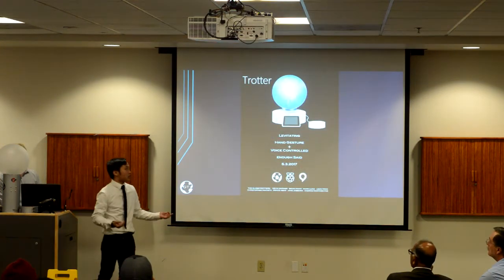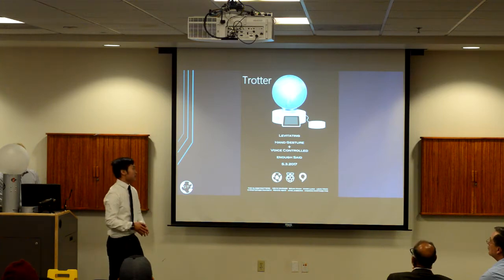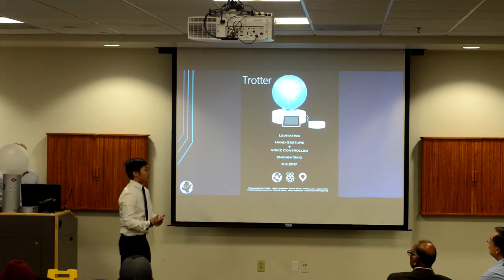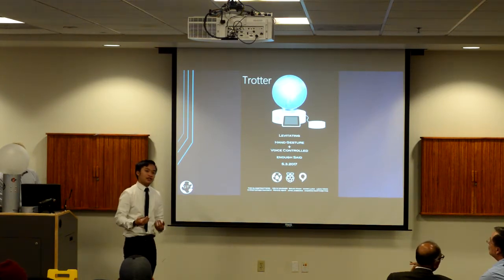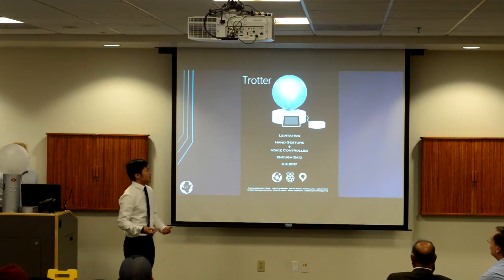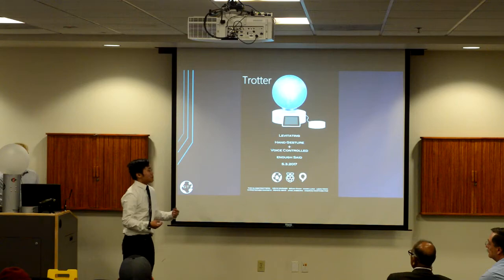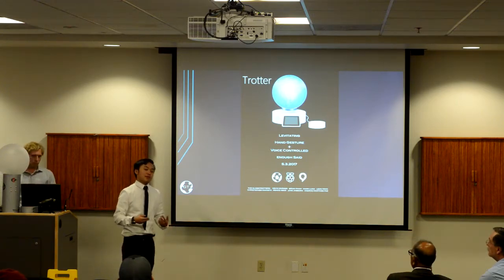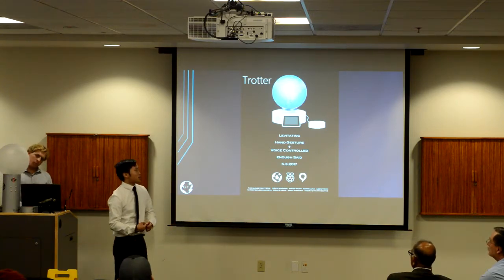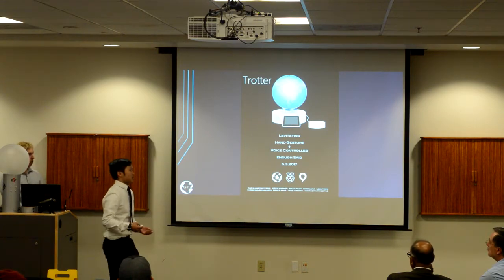So our product, Trotter, is a levitating interactive globe that will help teach kids about geography by telling them various facts and information about cities and countries across the globe. And it has been built with ease of accessibility for people with disabilities in mind, so it can be controlled through gesture controls and voice commands as well.